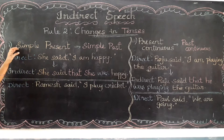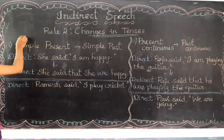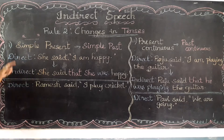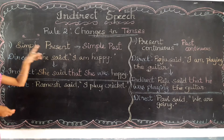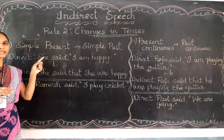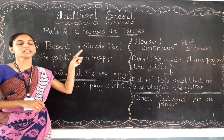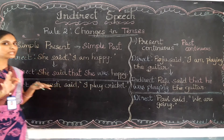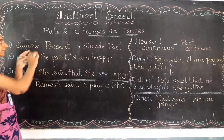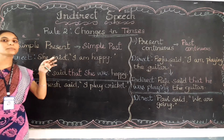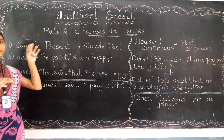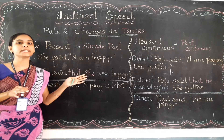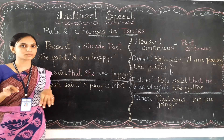First: if the reported speech — the speech which is inside the inverted commas or quotation marks — is in simple present, then it should be changed into simple past in the indirect speech. So when you find a simple present verb inside the quoted speech, that simple present verb should be changed to simple past when writing the indirect speech.